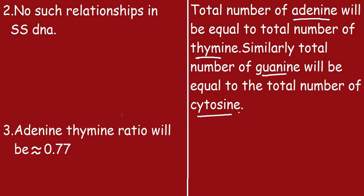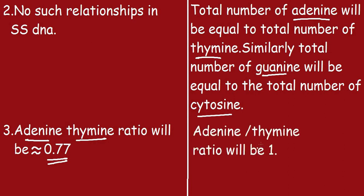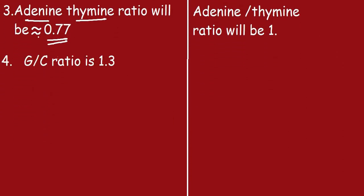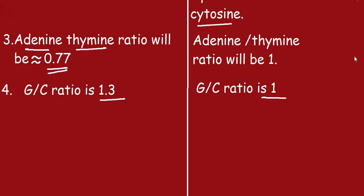The third point: for single-stranded DNA, the adenine-to-thymine ratio is approximately 0.77. For double-stranded DNA, the adenine-to-thymine ratio is 1. Fourth point: for single-stranded DNA, the G-to-C ratio (guanine to cytosine) is 1:3. For double-stranded DNA, the G-to-C ratio is 1.